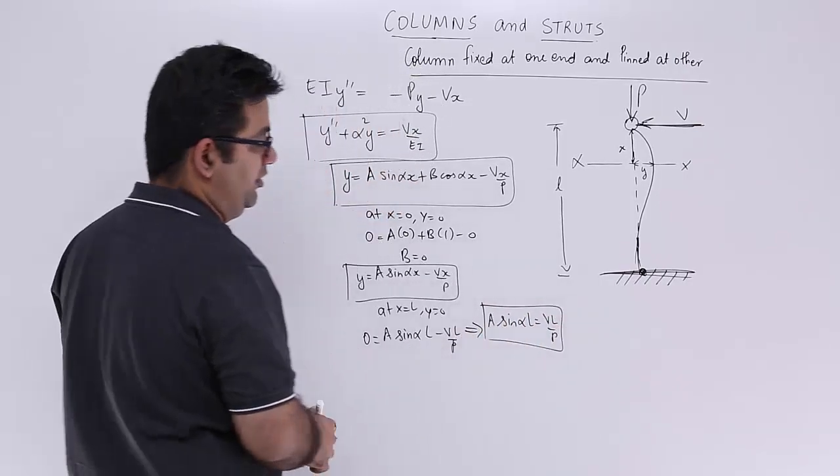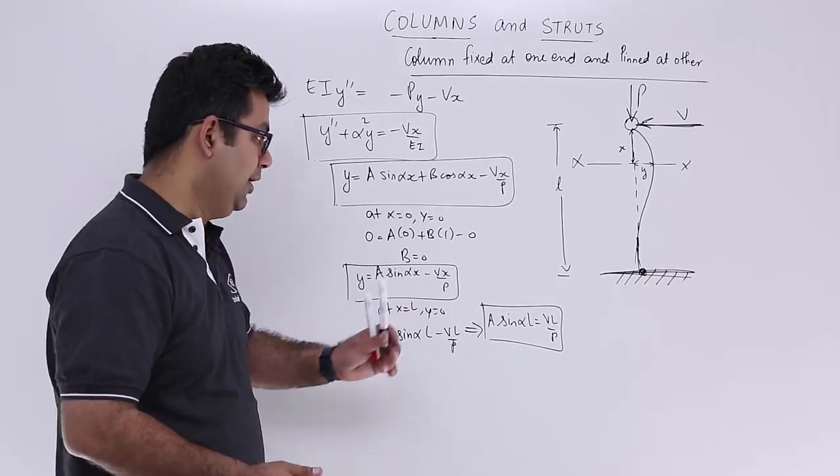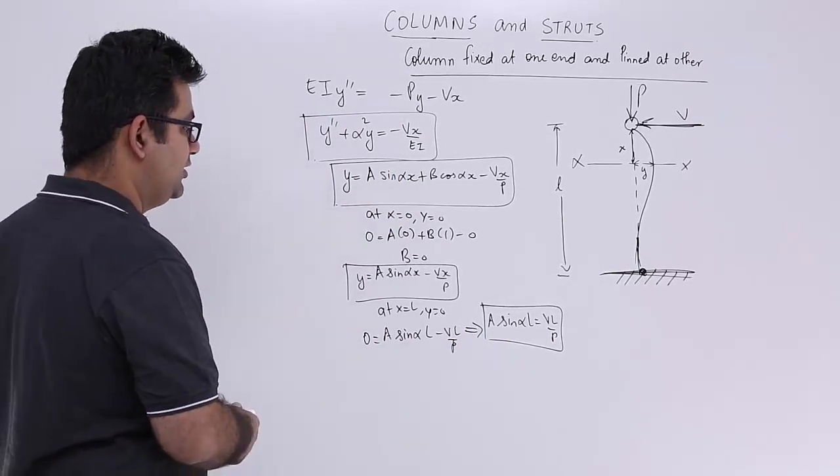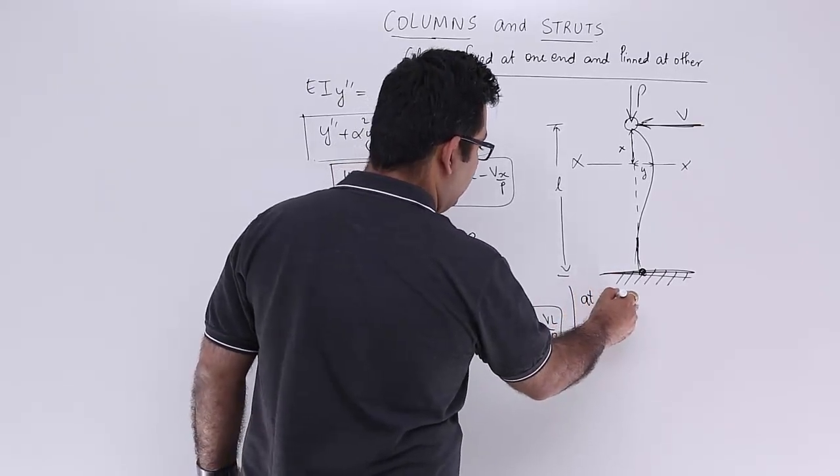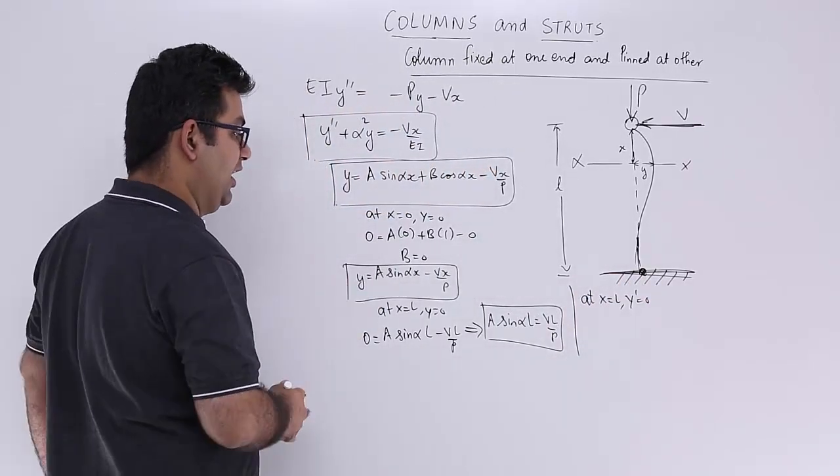Now you just have one equation over here and how do you find out unknown from here? That is a. So we need one more equation for comparison's sake. So we will say that at x is equal to l the slope is 0, y dash is 0. So let's find out y dash.